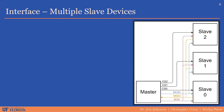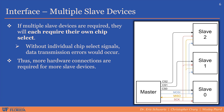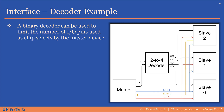SPI can support multiple slave devices on the same bus, but there are some complications to handle. Certain issues arise if multiple slave devices are activated at the same time. A unique chip select signal is required for each slave device connected to the bus. The more slave devices there are, the more chip select signals are required. When a significant number of slave devices are needed, it may be wise to use a binary decoder to limit the number of IO pins used by the master device.